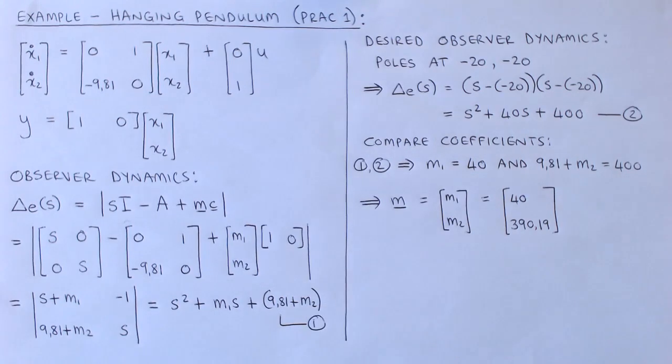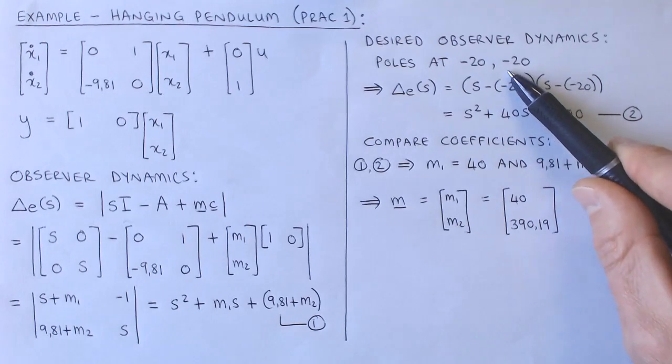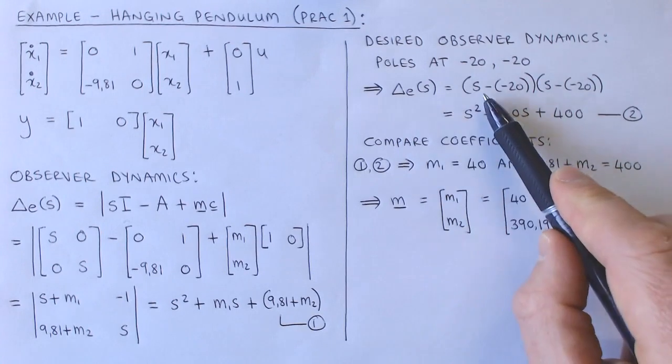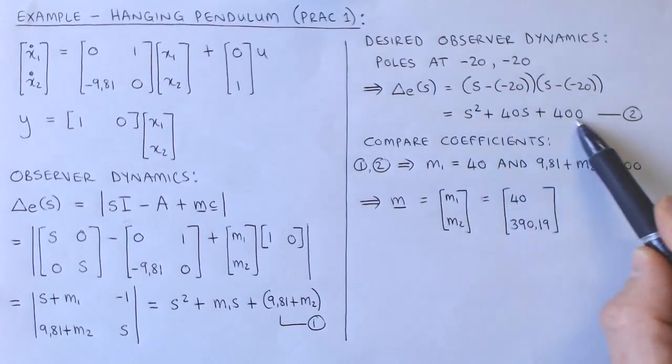We describe the desired observer dynamics by specifying the observer poles. In this example, we choose both observer poles to lie at minus 20. We can now calculate the desired characteristic polynomial as the product of S minus each pole, which results in this polynomial.